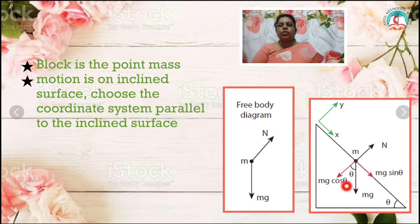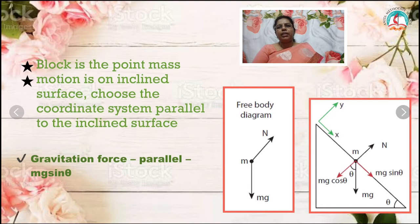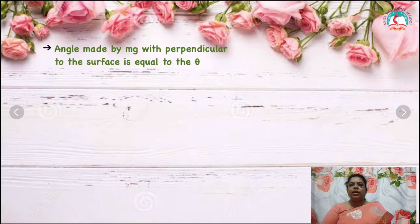The gravitational force Mg is resolved into two components: the parallel component Mg sin theta along the inclined plane, and the perpendicular component Mg cos theta, which is perpendicular to the inclined surface. The angle made by the gravitational force Mg with the perpendicular to the surface is equal to the angle of inclination theta.